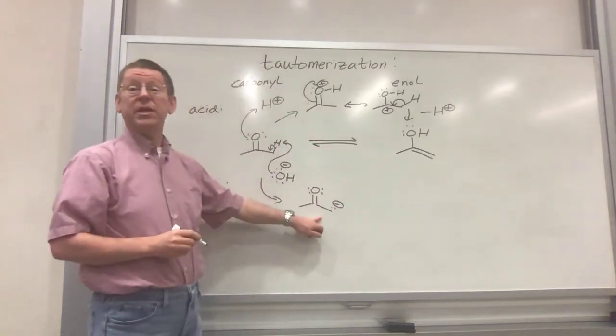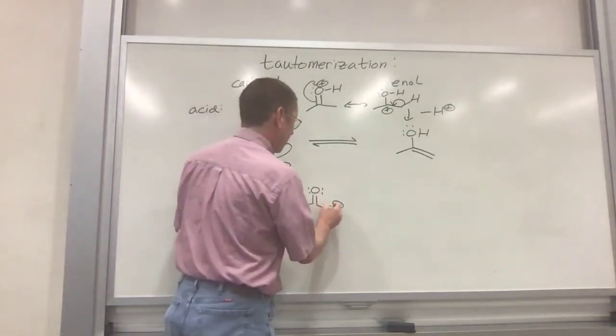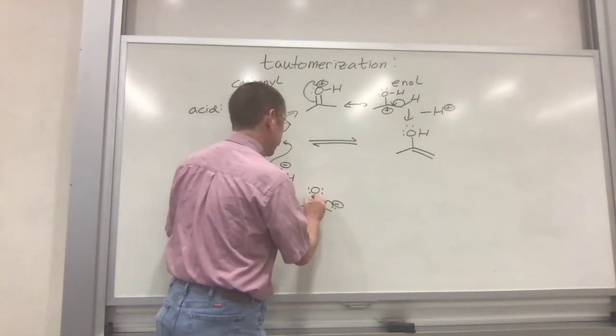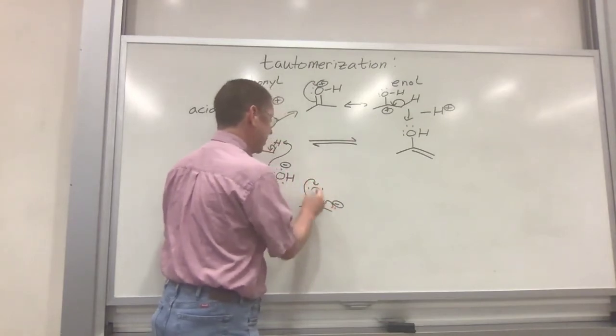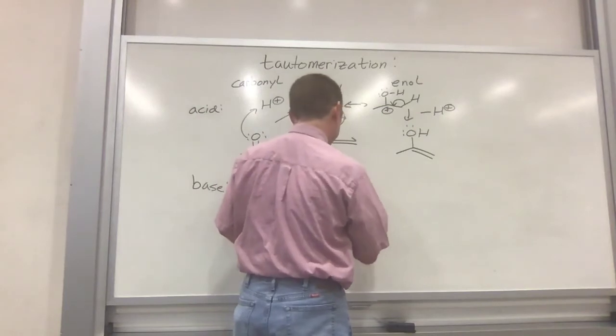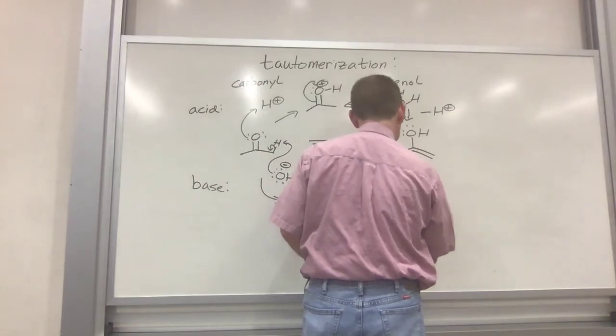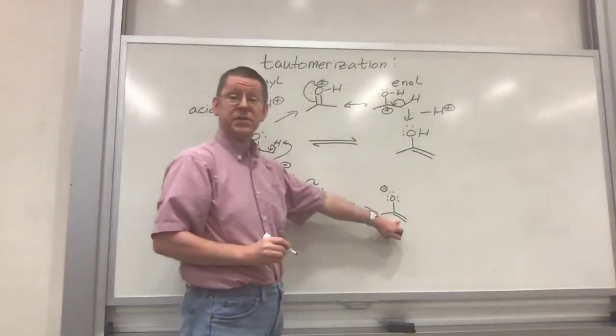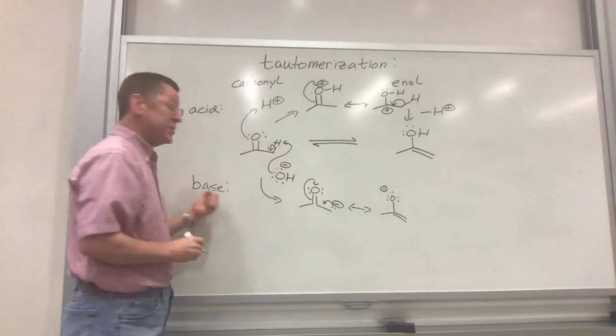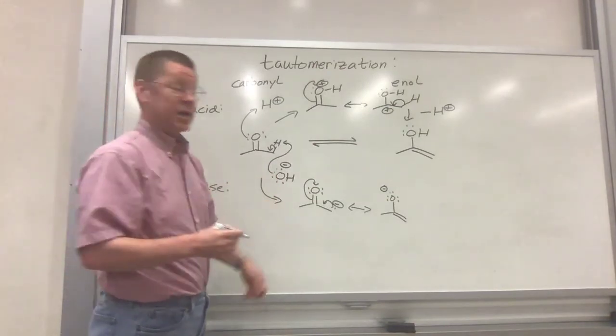So in essence, we've generated an enolate here at the moment, which we can draw either with the negative charge on carbon or a resonance contributor in which that negative charge is instead on oxygen. And we have the pi system here. And then since it's a base-catalyzed pathway, we better regenerate our base.